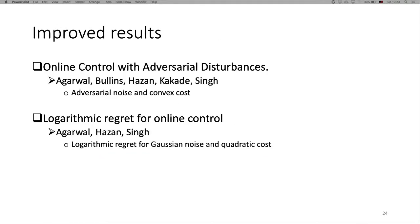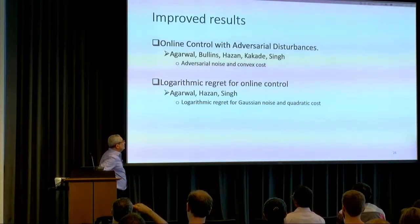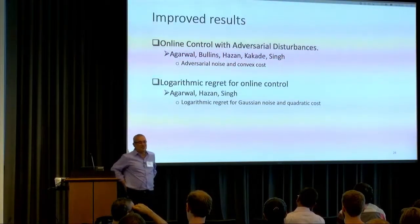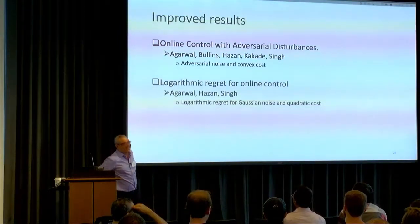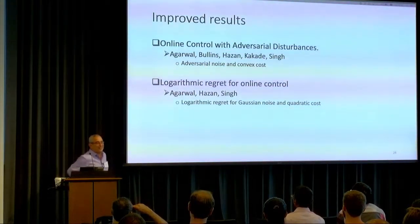Following our work, there were two improvements. The first, by Al-Gavar, Bulin, Verhaz, and Kaka, extended the work not only to quadratic forms but to adversarial noise and convex costs. The second improvement — still in progress — gets logarithmic regret. We showed square root T regret; they are getting logarithmic regret for Gaussian noise and quadratic costs, though stronger assumptions may be needed.